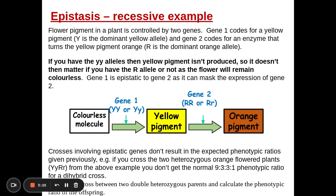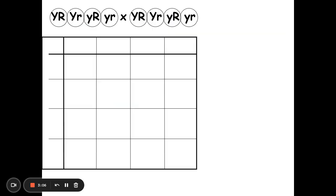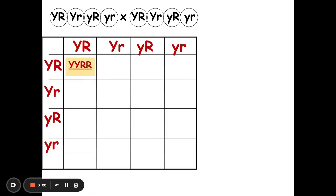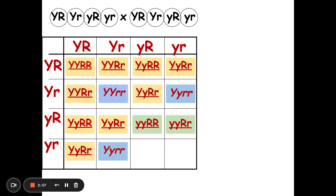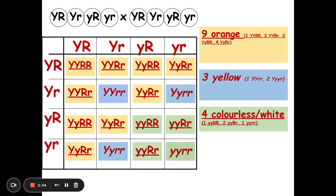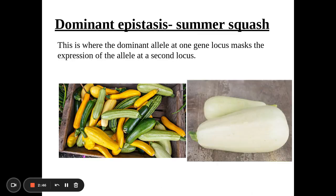I advise you to pause the video and do a genetic cross between two double heterozygous individuals and calculate the phenotypic ratio, because it is not going to be the typical 9:3:3:1 you'd get with two heterozygous flowers. Here are the gametes of the parents put into the Punnett square. You should have got a ratio of nine orange to three yellow to four white (colorless) — a 9:3:4 ratio. That's recessive epistasis.